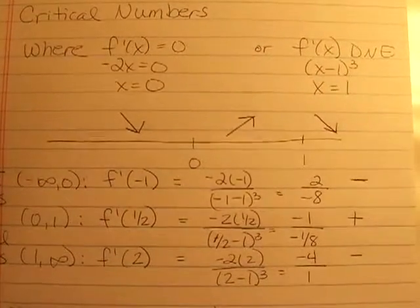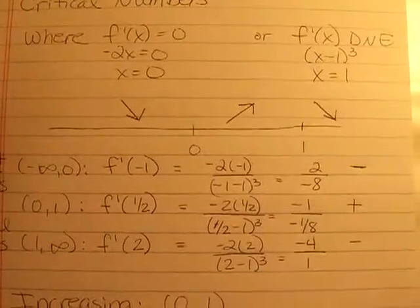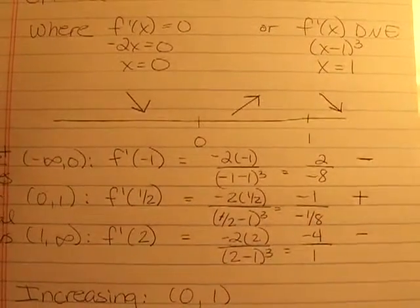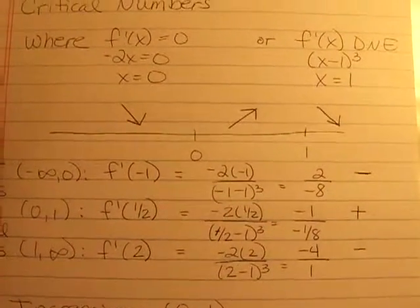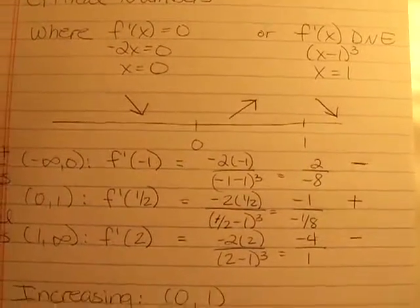The next interval between zero and one, we come up with a positive number. And the last interval between one and infinity, we come up with a negative number. So that shows us where our intervals are increasing or decreasing.